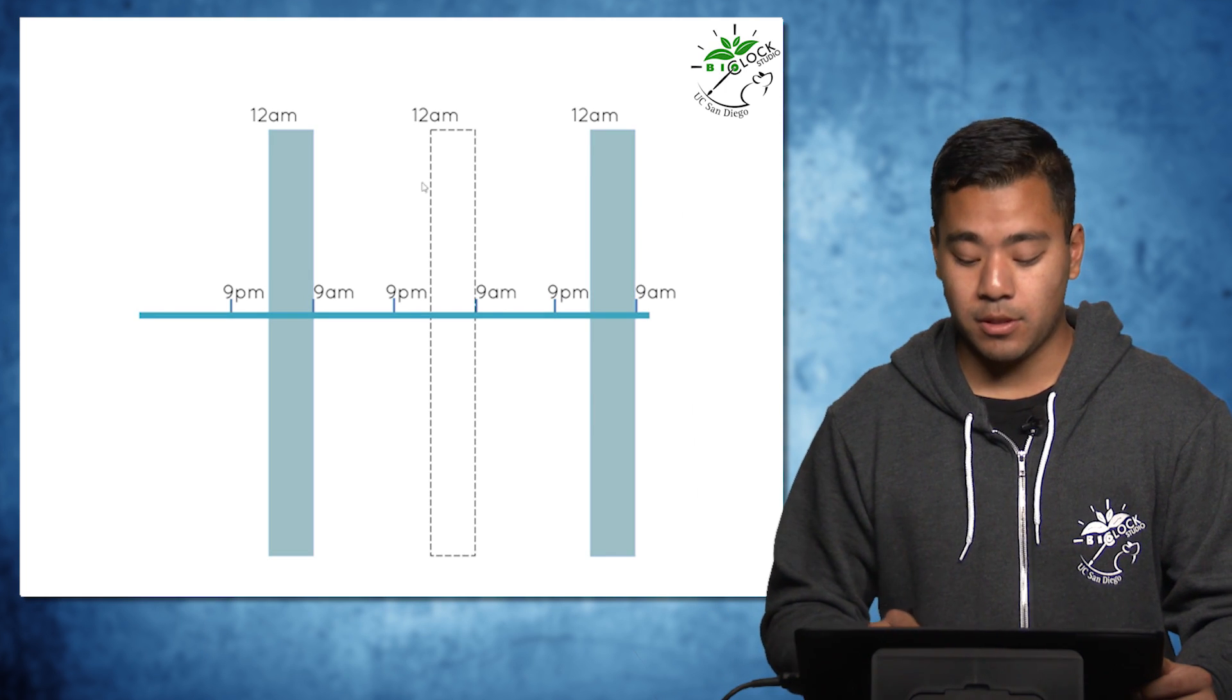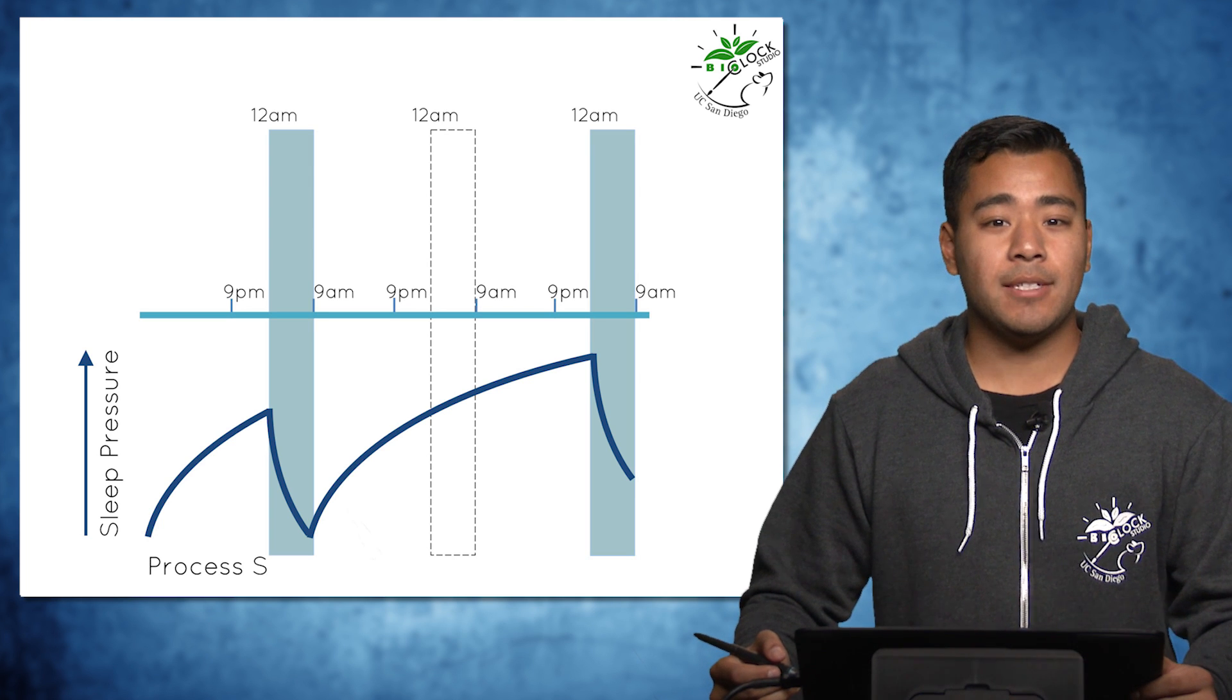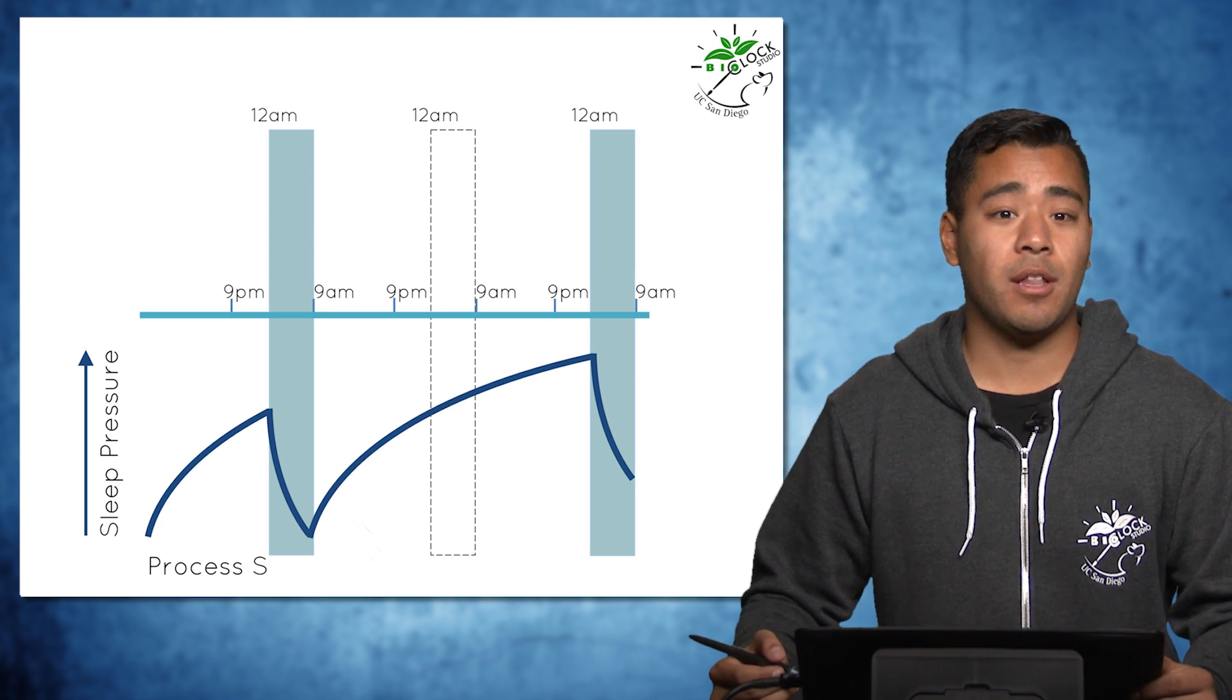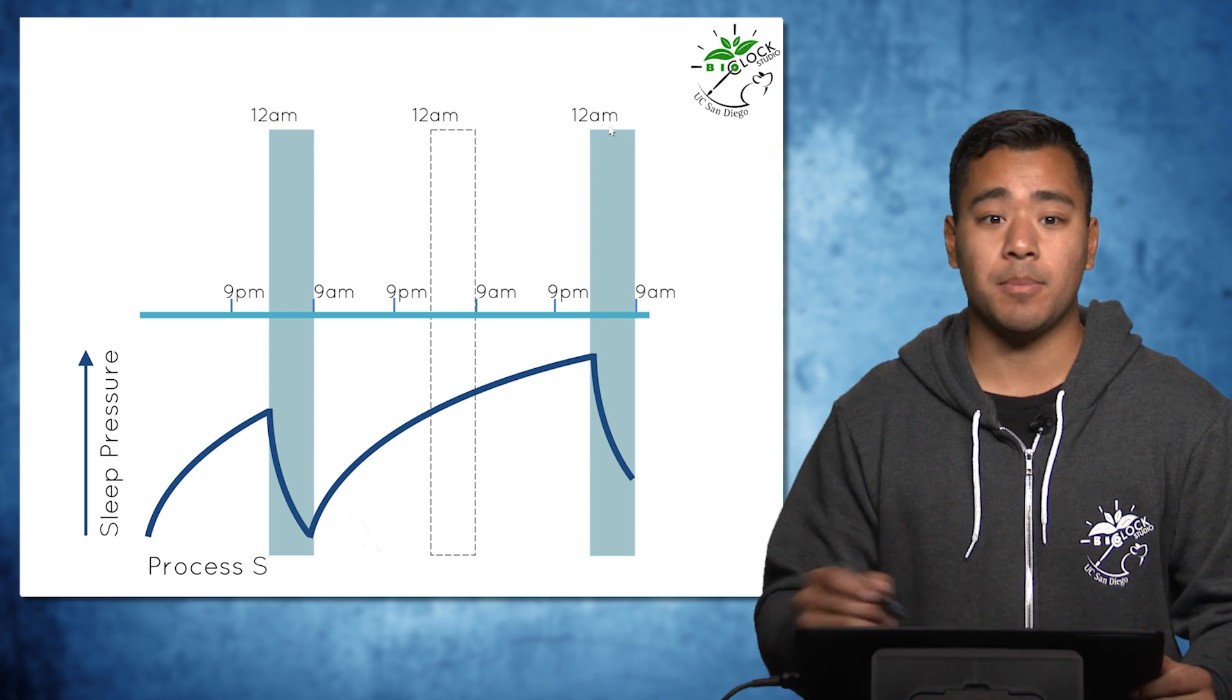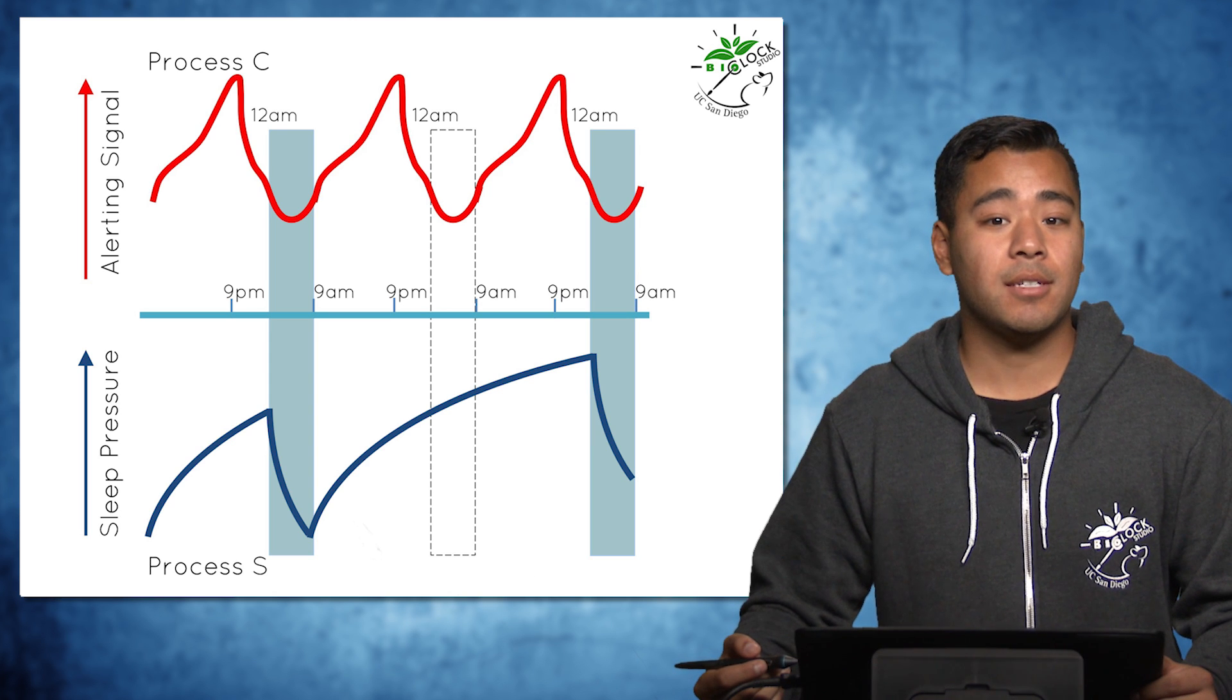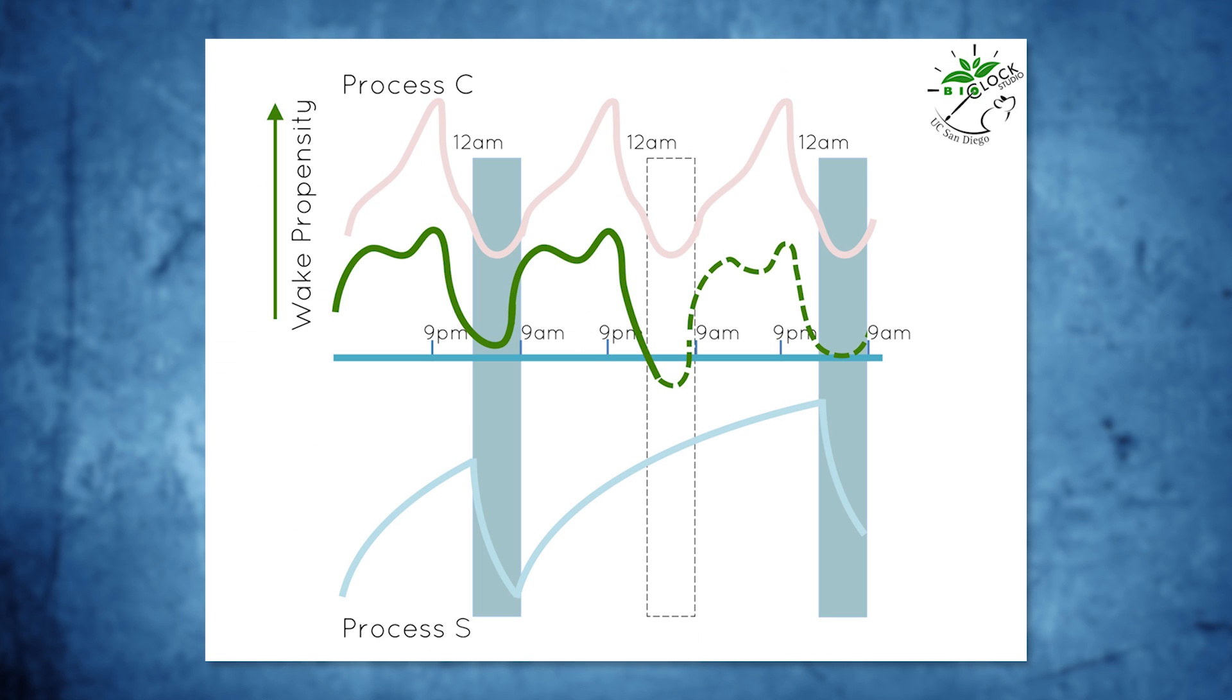As you can see here, this individual decided to skip sleep on the second night. Sleep homeostasis continues to build up sleep pressure due to the lack of sleep continuing until the third night when the individual finally sleeps. The circadian clock continues to cycle normally and provides a consistent alerting signal interval. With this huge rise in sleep pressure, the person's alertness level will fall greatly during the time where the alerting signal is very low. This leads to a high risk of falling asleep.